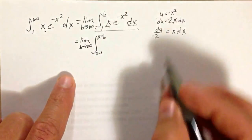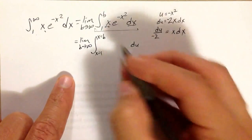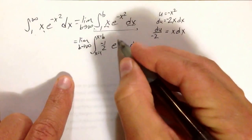x dx is equal to du over negative 2, where I could put a negative 1 half out in front. And then this is e to the u.